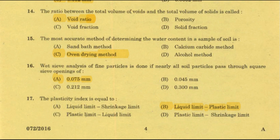To summarize: void ratio e equals volume of voids divided by volume of solids; porosity n equals volume of voids divided by total volume. Next question: The most accurate method of determining the water content in a soil sample — the right answer is option C, oven drying method. Other available methods include sand bath method, calcium carbide method, and alcohol method.